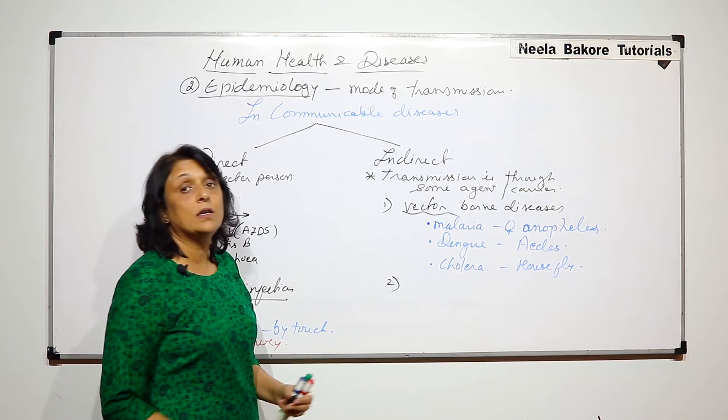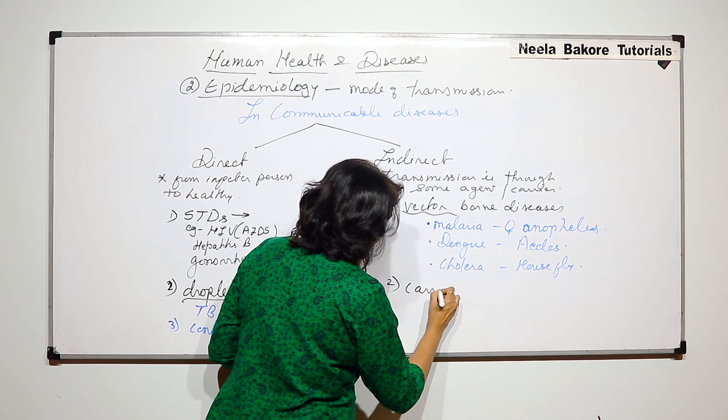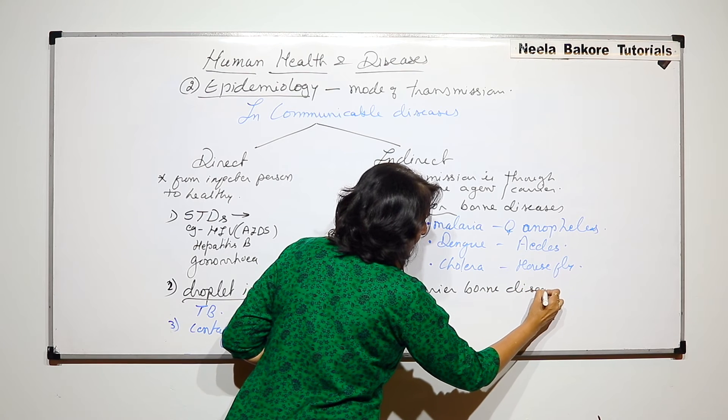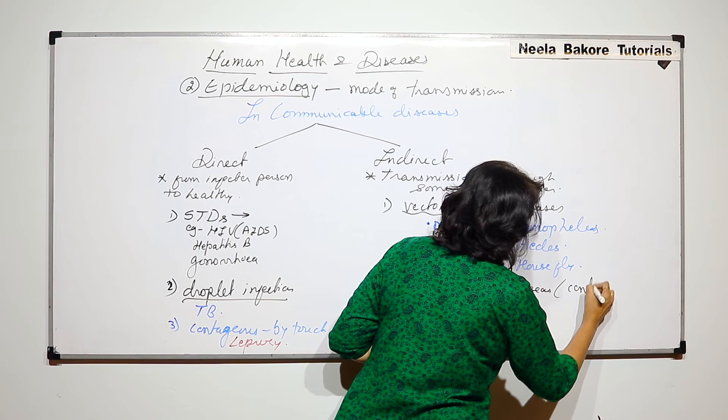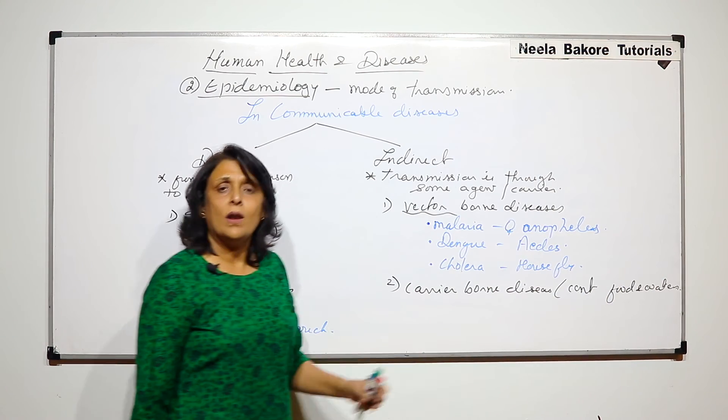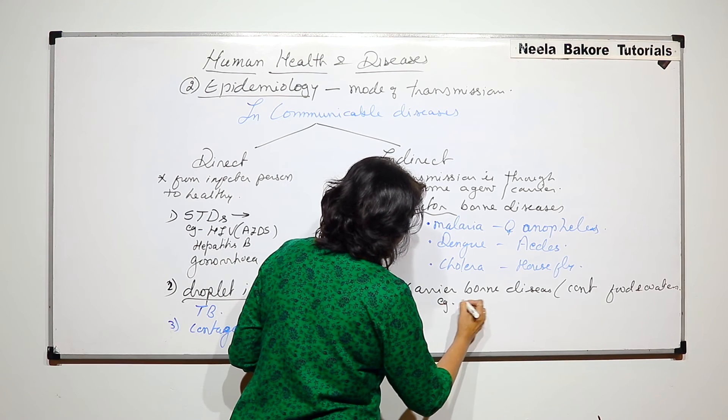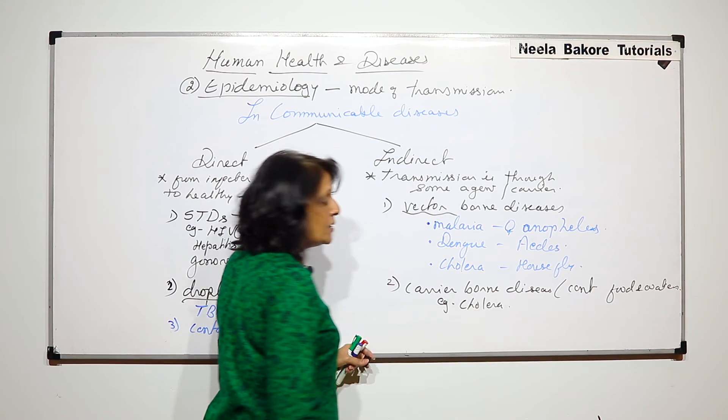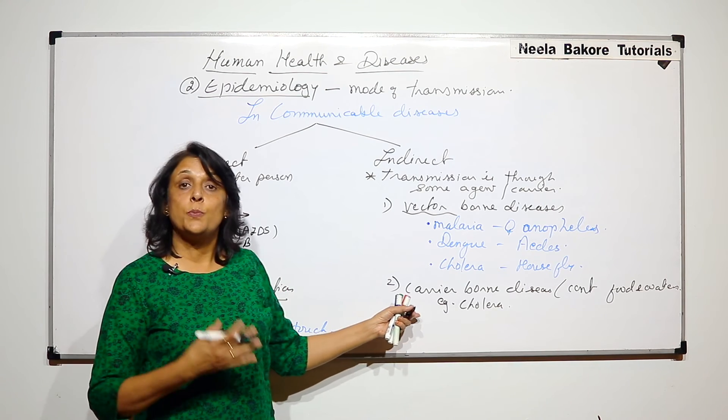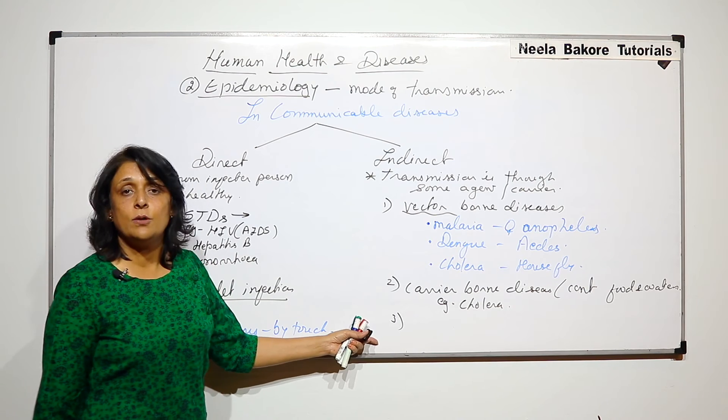Then there is some non-living things. There can be some carriers like water and food. It is called carrier-borne diseases which spread through contaminated food and water. Cholera again, typhoid. These are very common here also. Diarrhea, dysentery. These are very common diseases which spread through contaminated food and water. The third is called fomite-borne disease.